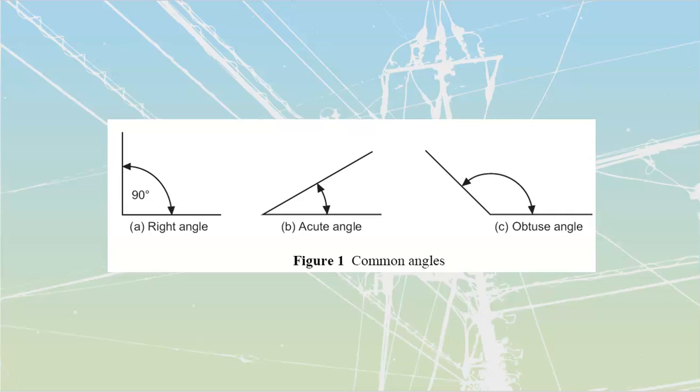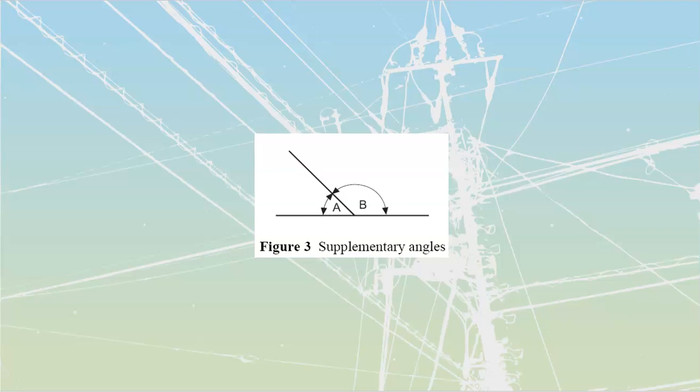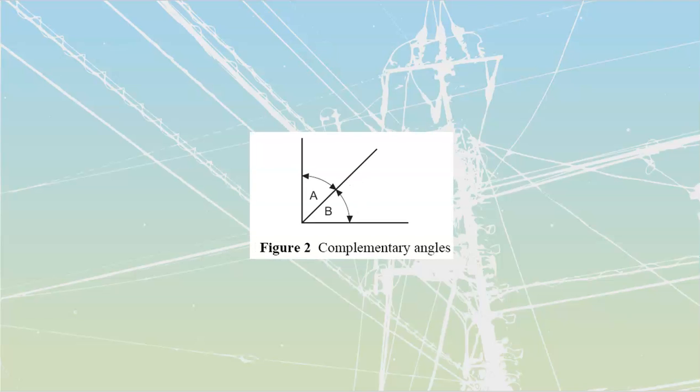All right. The very first thing that they talk about is just definitions of angles. These are all things that you would have learned back in elementary or middle school. First one over here is just going to be a right angle. Anything that's going to have a 90 degree corner, an acute angle, anything that's going to be less than 90 degrees, and an obtuse angle, which is going to be anything that is going to be more than 90 degrees.